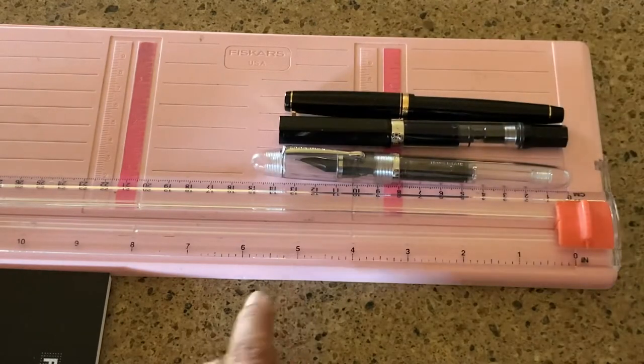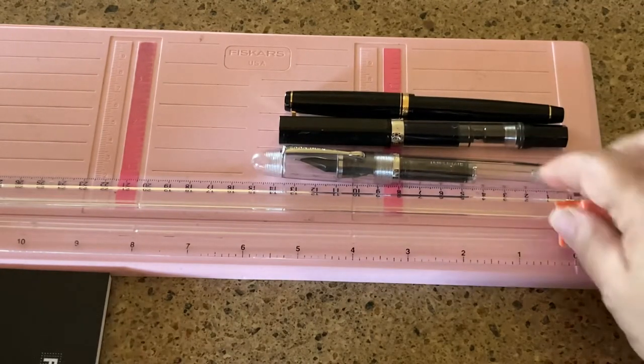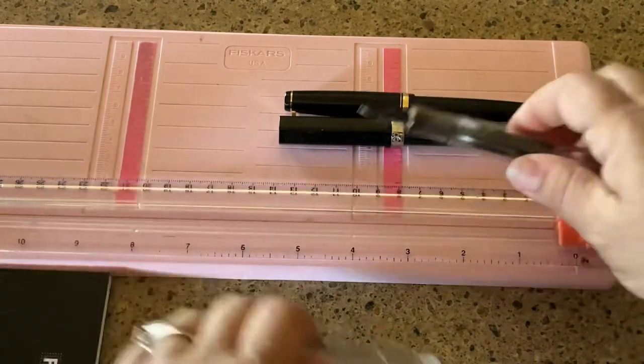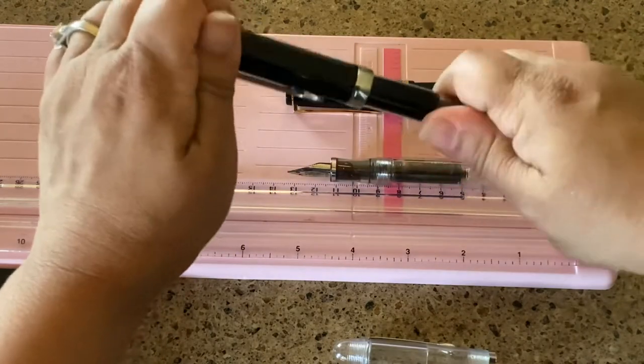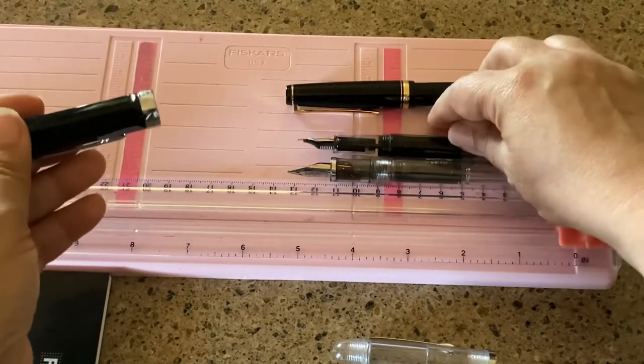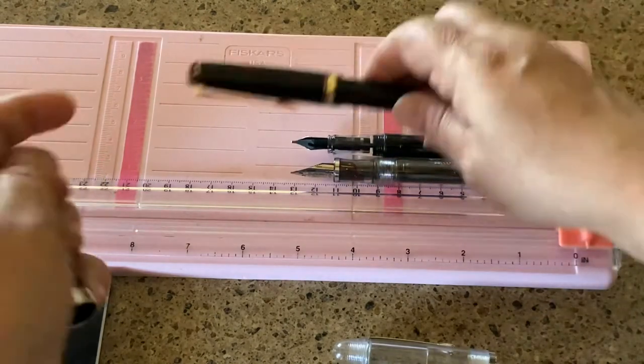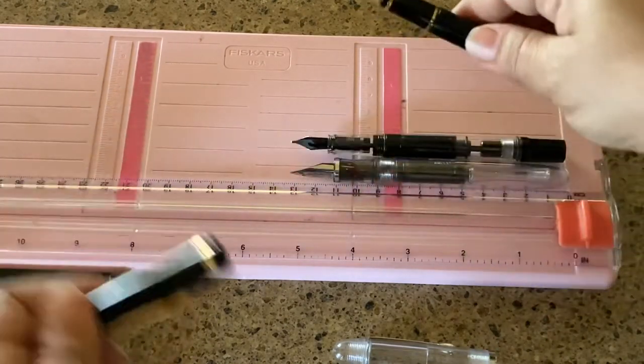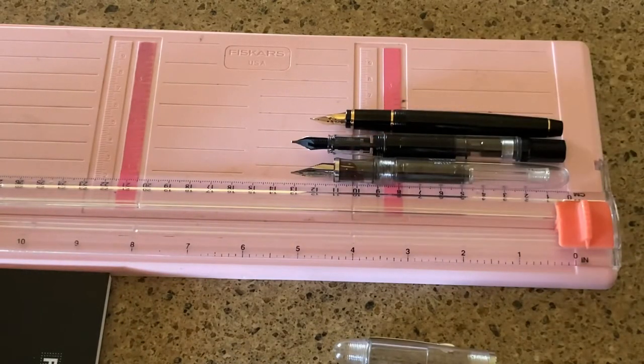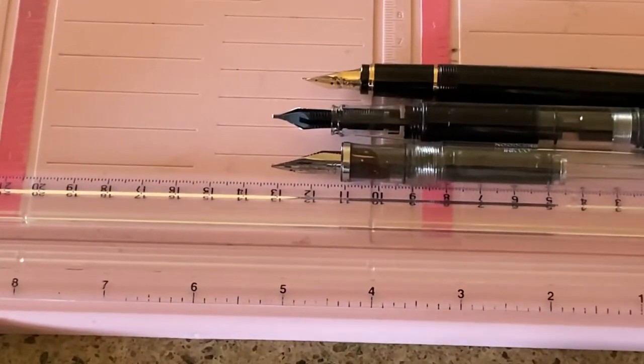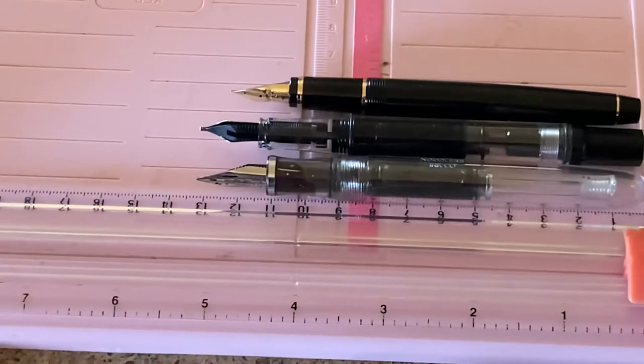And then I have my Pilot Falcon, which is right above five. You can see all of those lined up. So there's just a little size comparison. And then I will do these uncapped. That is my Pilot Falcon. It's the smallest one in the row there, so you can just kind of get a good size comparison there.